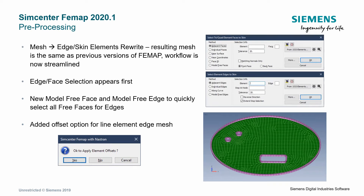Another command that's been rewritten is the Edge and Skin Elements command. Previously you had to select the nodes and then the elements separately. Now it brings up the edge and face selection dialog and you just select the edges or faces, and FEMAP automatically knows which nodes and elements are involved — a more streamlined approach. They've also added the offset option for edge element mesh, saving you clicks that you'd otherwise spend going to Modify > Update Elements > Update Element Offsets.